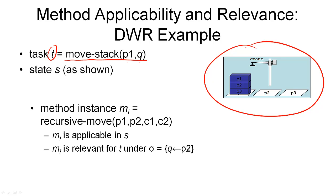Then we can look at the following method instance m_i, which is recursive-move(p1, p2, c1, c2). So remember, this is the pile from which we're moving, this is the pile to which we're moving, this is the container we're trying to move, and this is the container from which we're taking it.